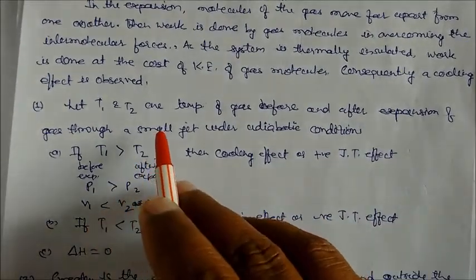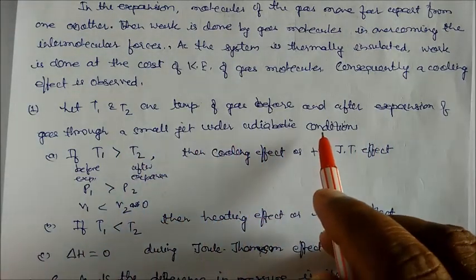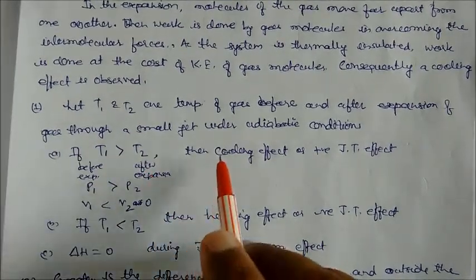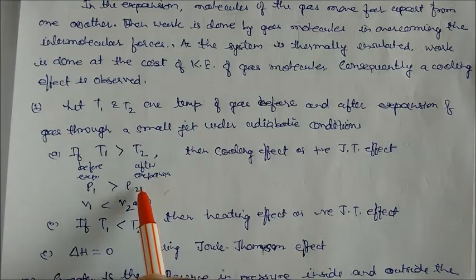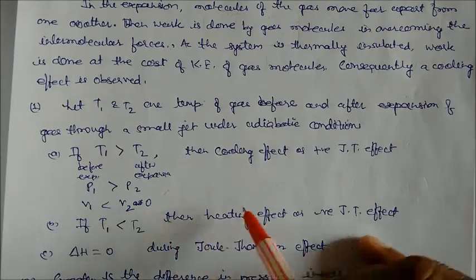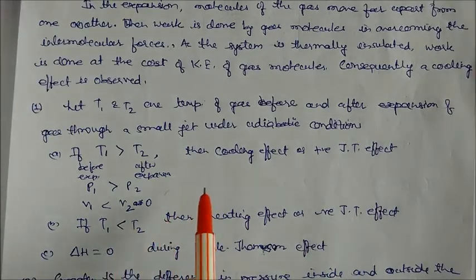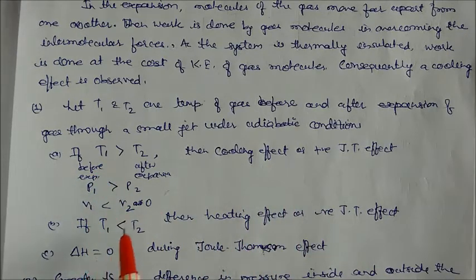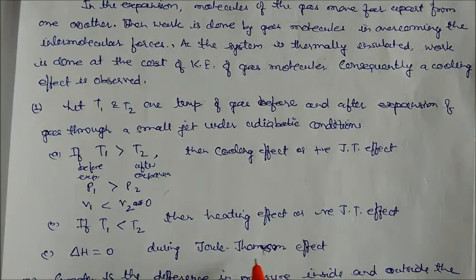Let T1 and T2 be the temperatures of the gas before and after expansion through a small jet under adiabatic conditions. P1 is the pressure before expansion and P2 is the pressure after expansion. Similarly, V1 is the volume before expansion and V2 is the volume after expansion. If T1 is greater than T2, then the cooling effect is positive. Delta H is zero because there is no addition of heat during the Joule-Thompson effect.